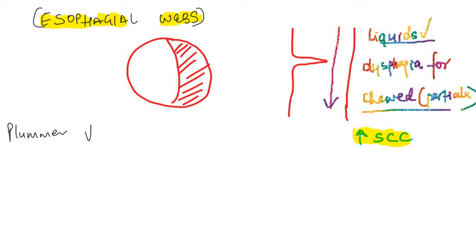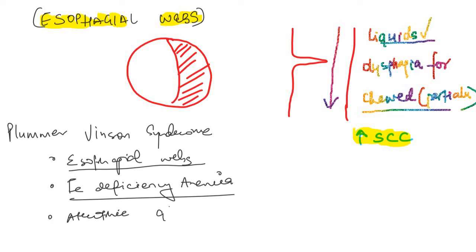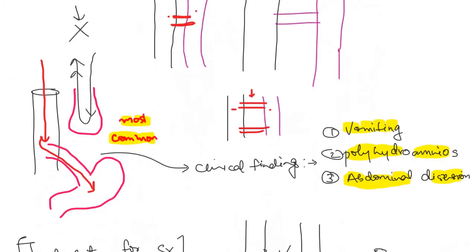In association with esophageal webs, there is Plummer-Vinson syndrome. This consists of esophageal webs — most commonly in the cervical esophagus — along with iron deficiency anemia and atrophic glossitis. Atrophic glossitis is intense inflammation of the tongue causing it to become beefy red with damage to the epithelium.